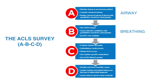Normal partial pressure of carbon dioxide is between 35 to 40 mmHg. High-quality CPR should produce an ETCO2 between 10 to 20 mmHg. If the ETCO2 reading is less than 10 mmHg, confirm the quality of CPR and placement of the advanced airway.